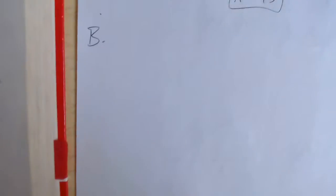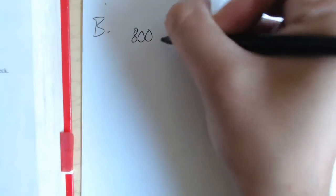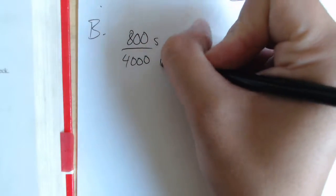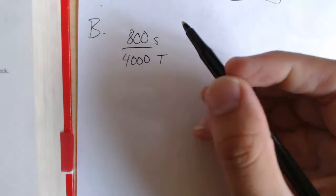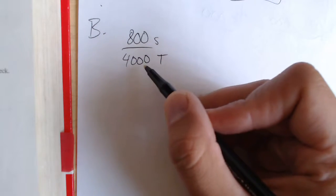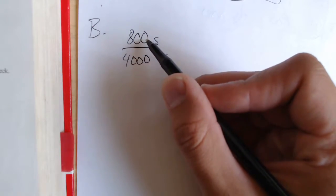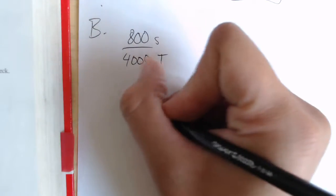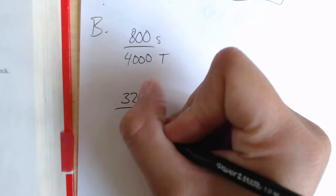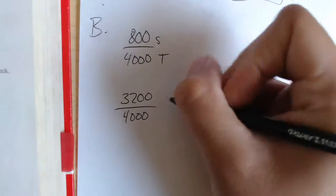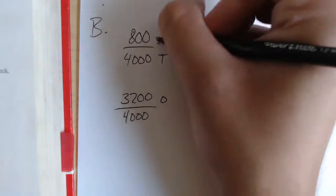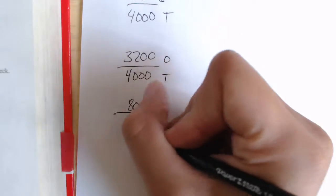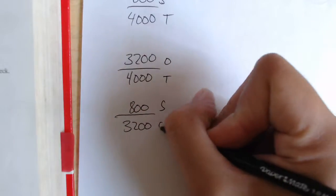So our first ratio of 800 of sulfur to 4,000. 4,000 is actually the total, because 4,000 is the new compound. So if 4,000 is the total, we have to subtract to find the other part. So 4,000 minus 800 gives us 3,200 over 4,000. So that is the other stuff. We'll represent that with an O to the total. And then the last ratio would be 800 to 3,200, which would be sulfur to other stuff.